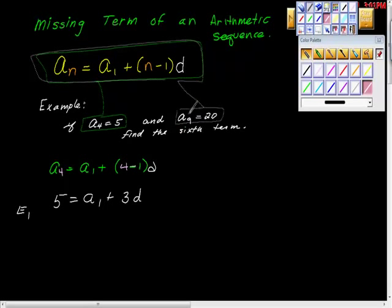Then I'm going to do the same thing with the second equation. The ninth term is also equal to the first term plus n is 9, so 9 minus 1 times the common difference. We know that the ninth term is 20.